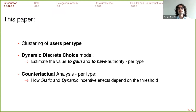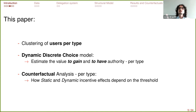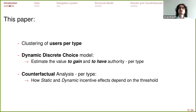I will estimate these preference parameters for each type of user identified in the first step, to understand who is sensitive to what and which type of users the platform is targeting when implementing one incentive or another. Finally, once preference parameters are estimated, I will simulate counterfactual analysis to understand from the platform's perspective what trade-off it faces when pushing on the dynamic incentive rather than the static incentive by shifting the threshold level.